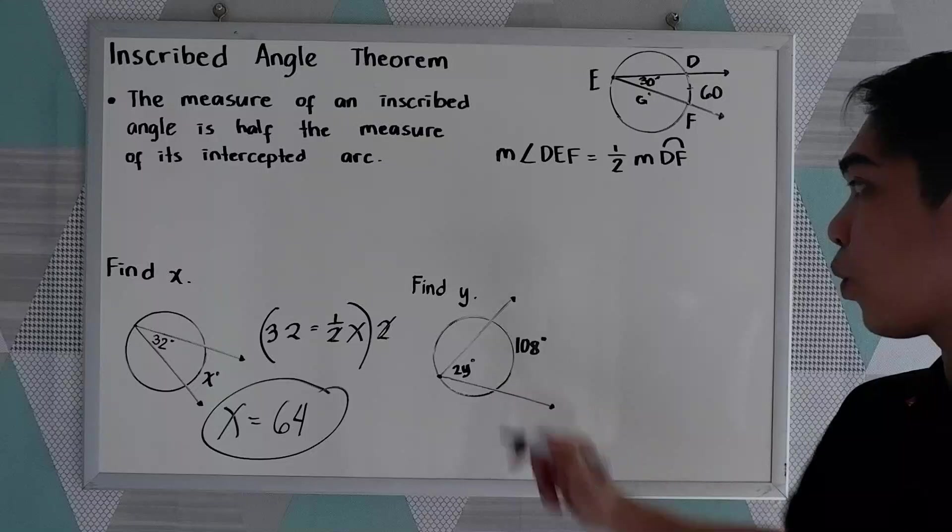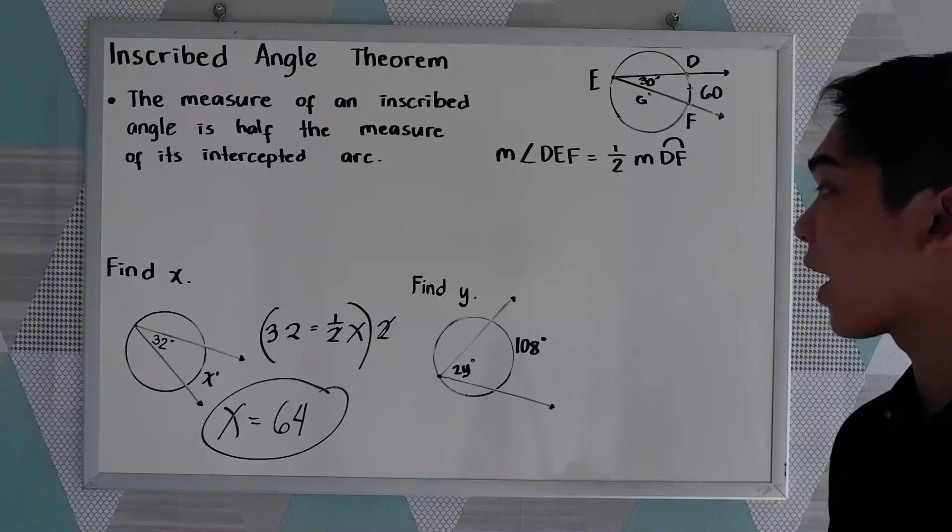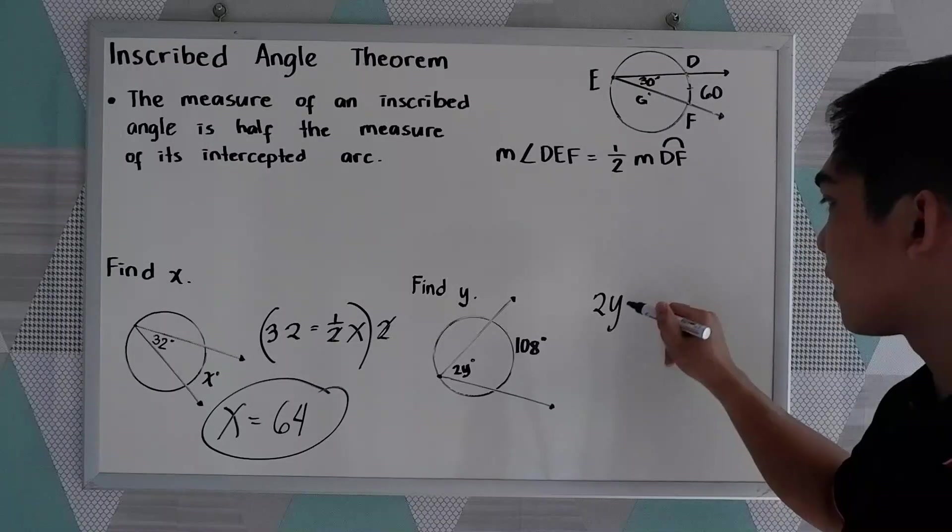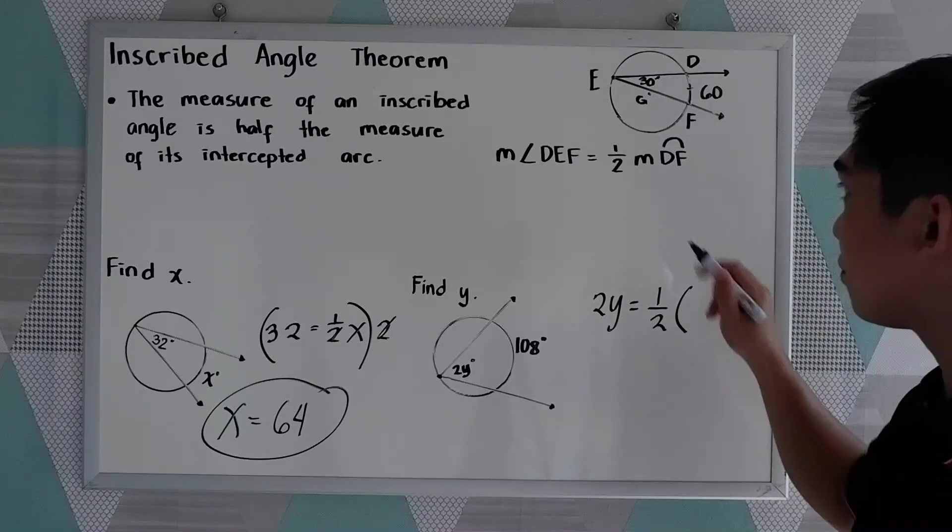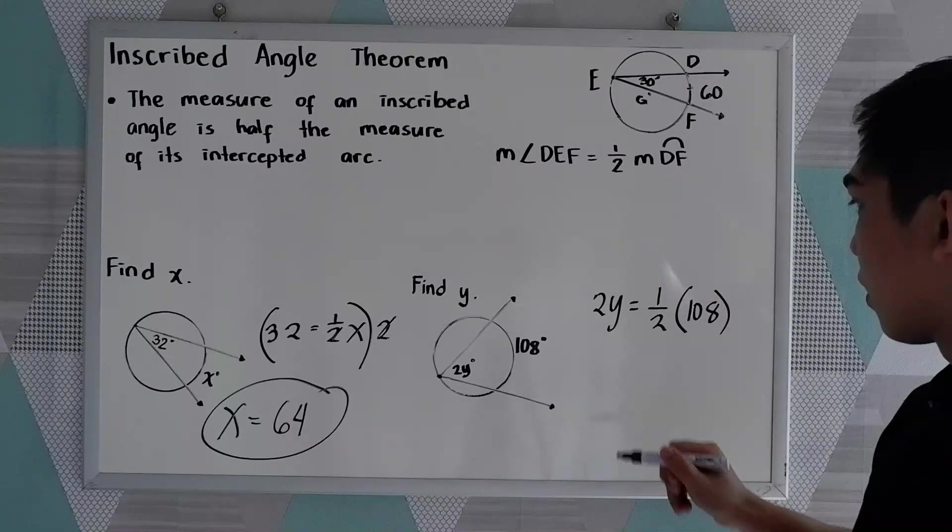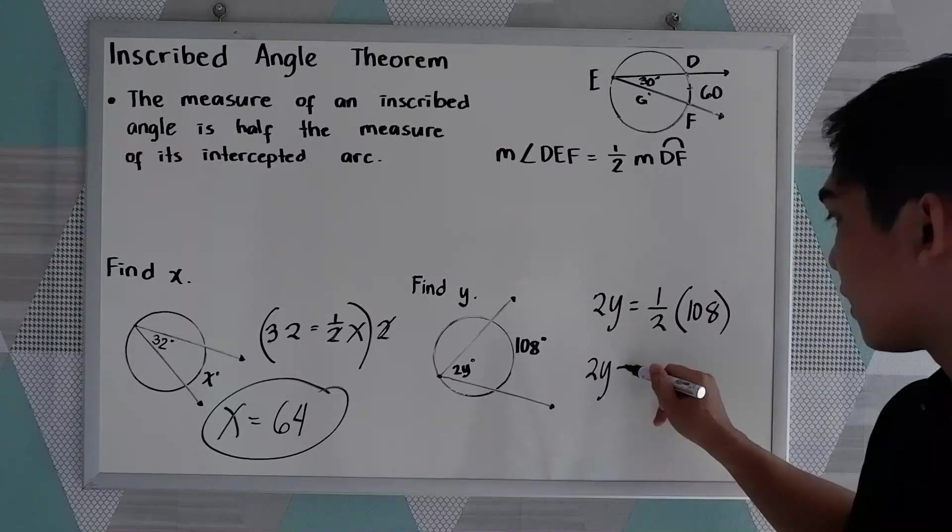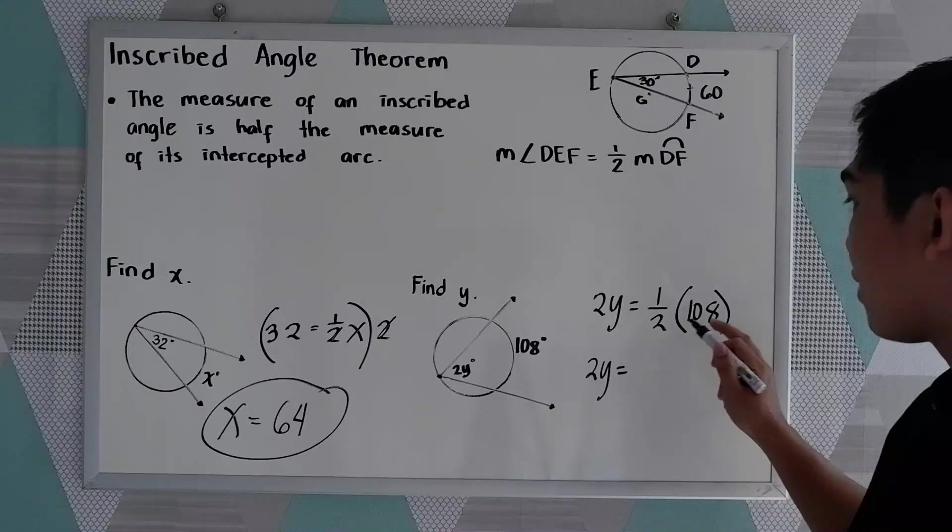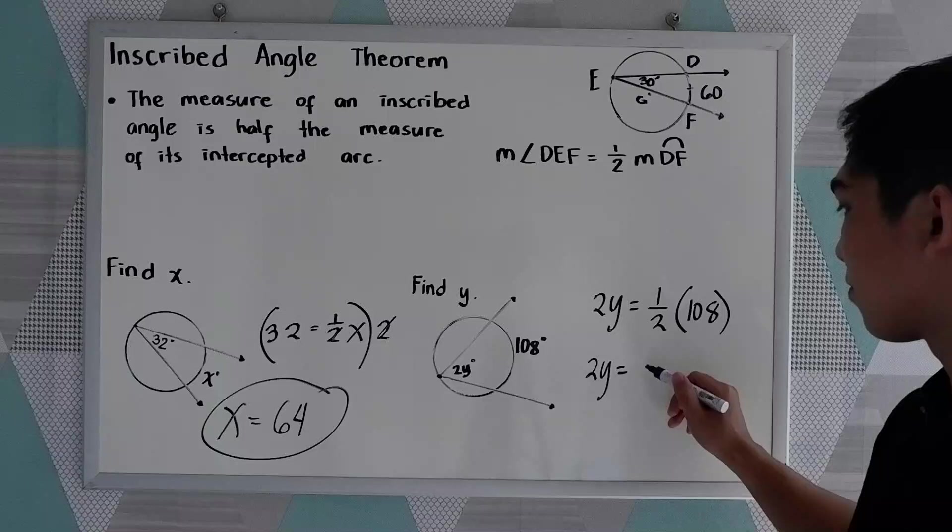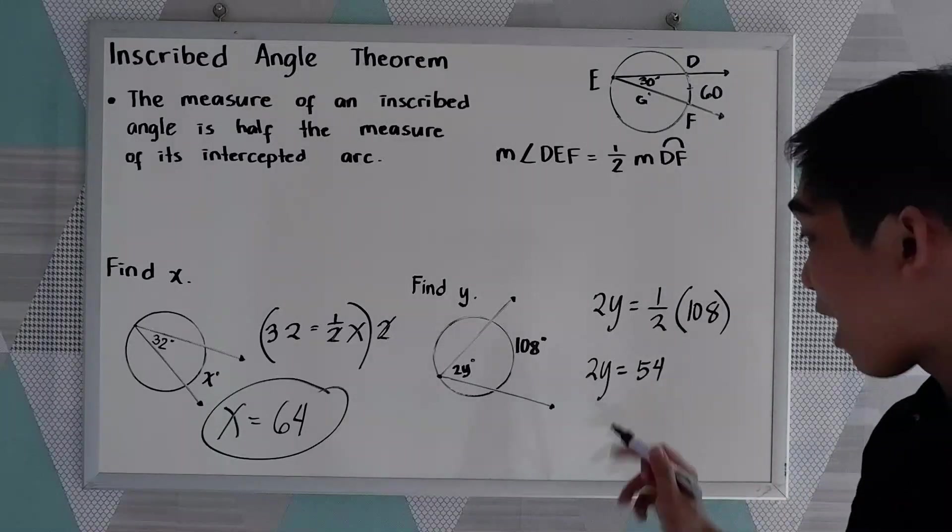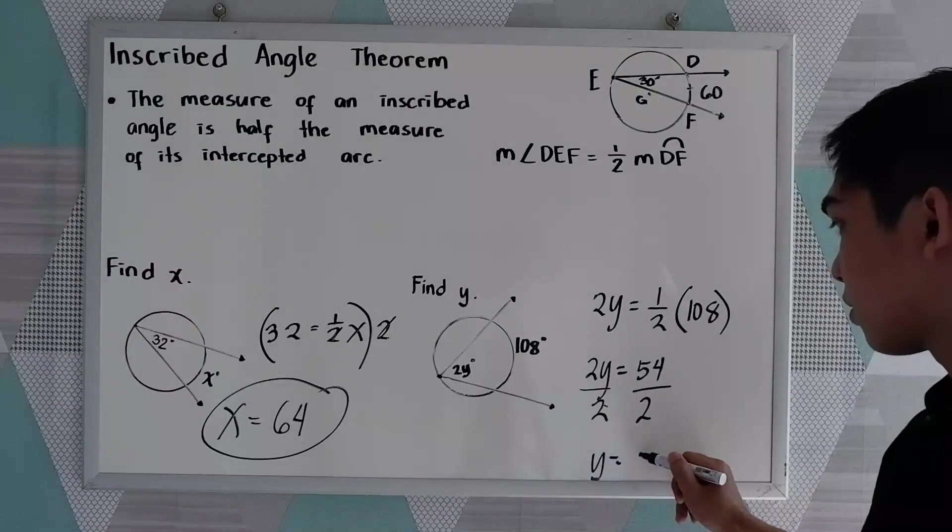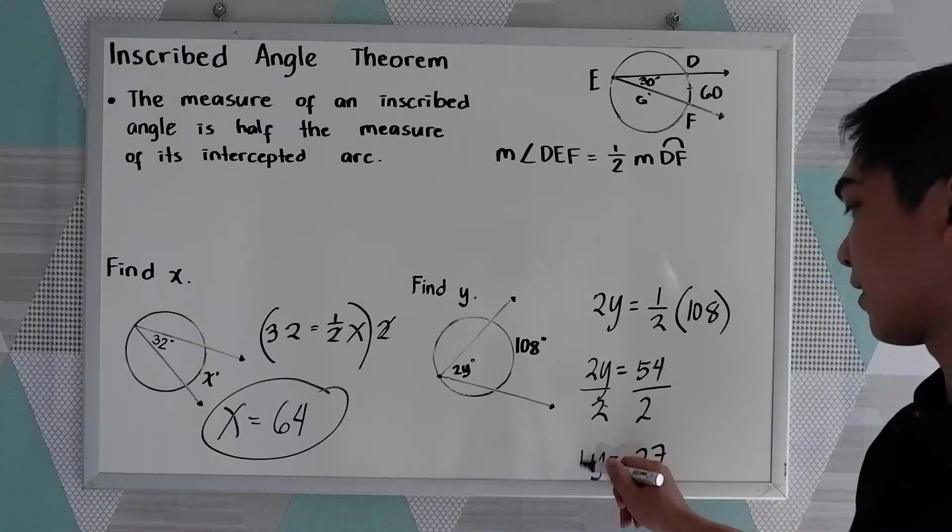In this case, find Y. We're looking for Y. So, the measure of the angle 2Y is equal to one-half of the intercepted arc, which is 108. So, 2Y is equal to 108 divided by 2. That is 54. Now, if we get Y divided by 2, so Y is 27.